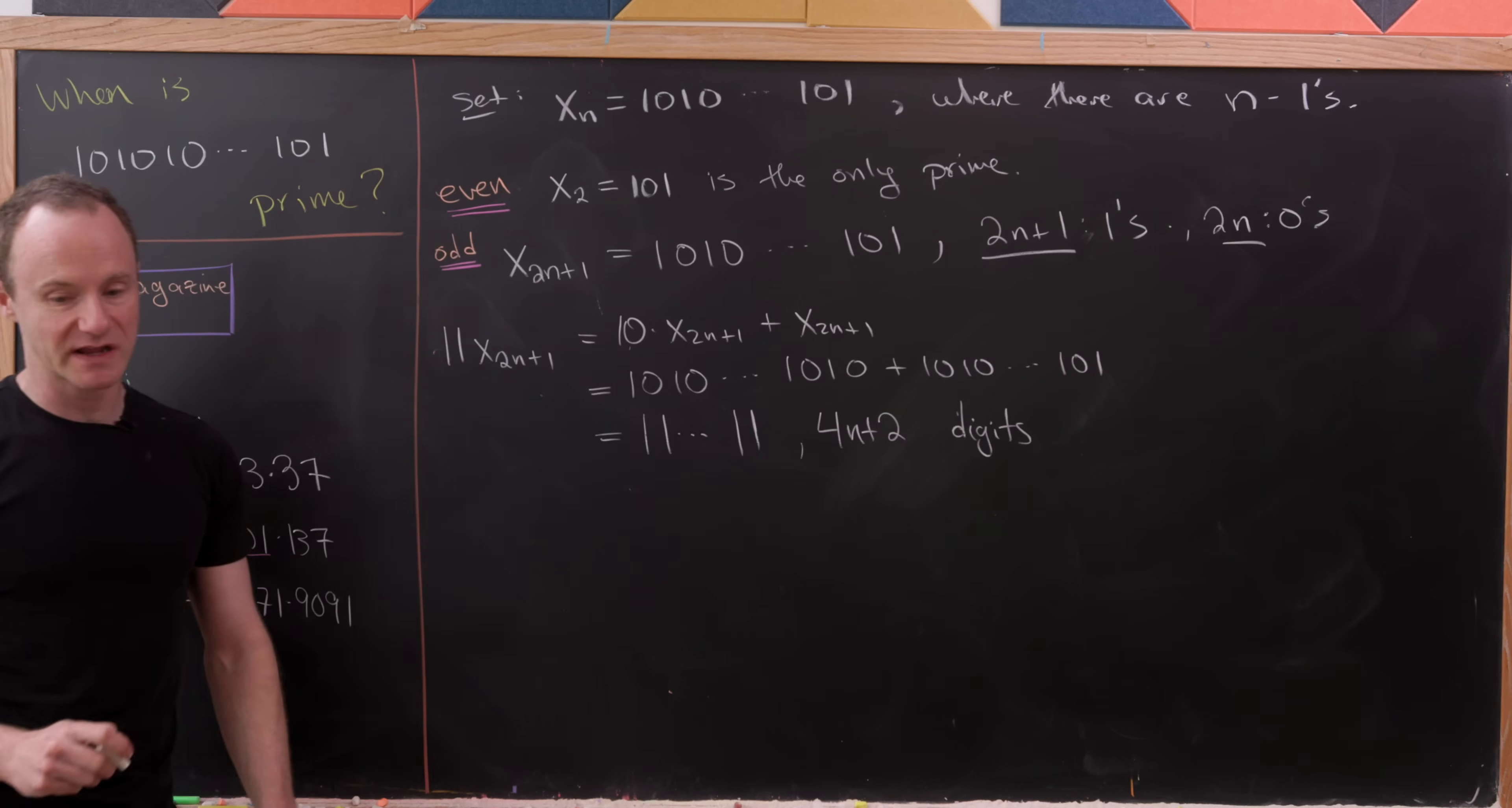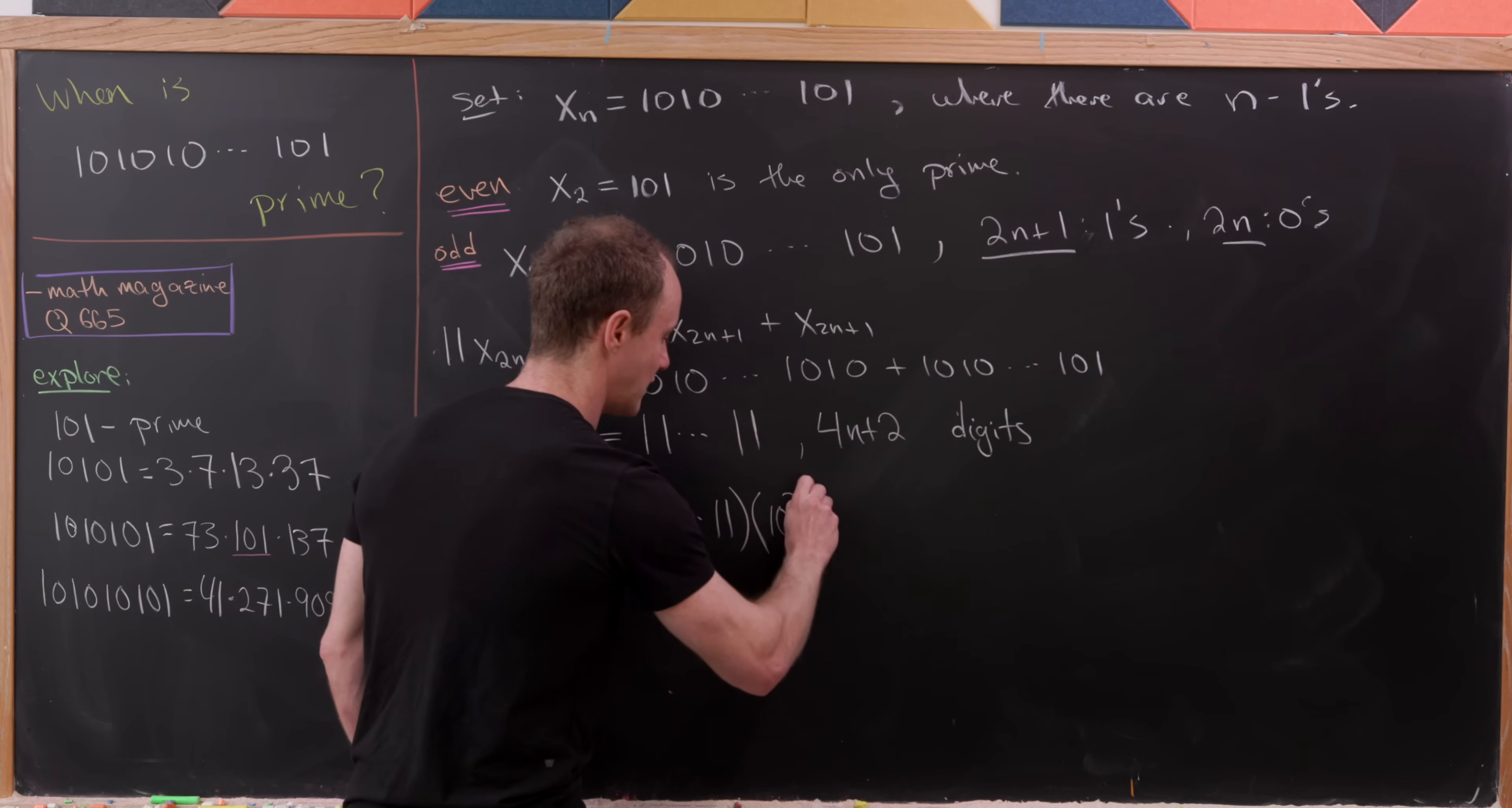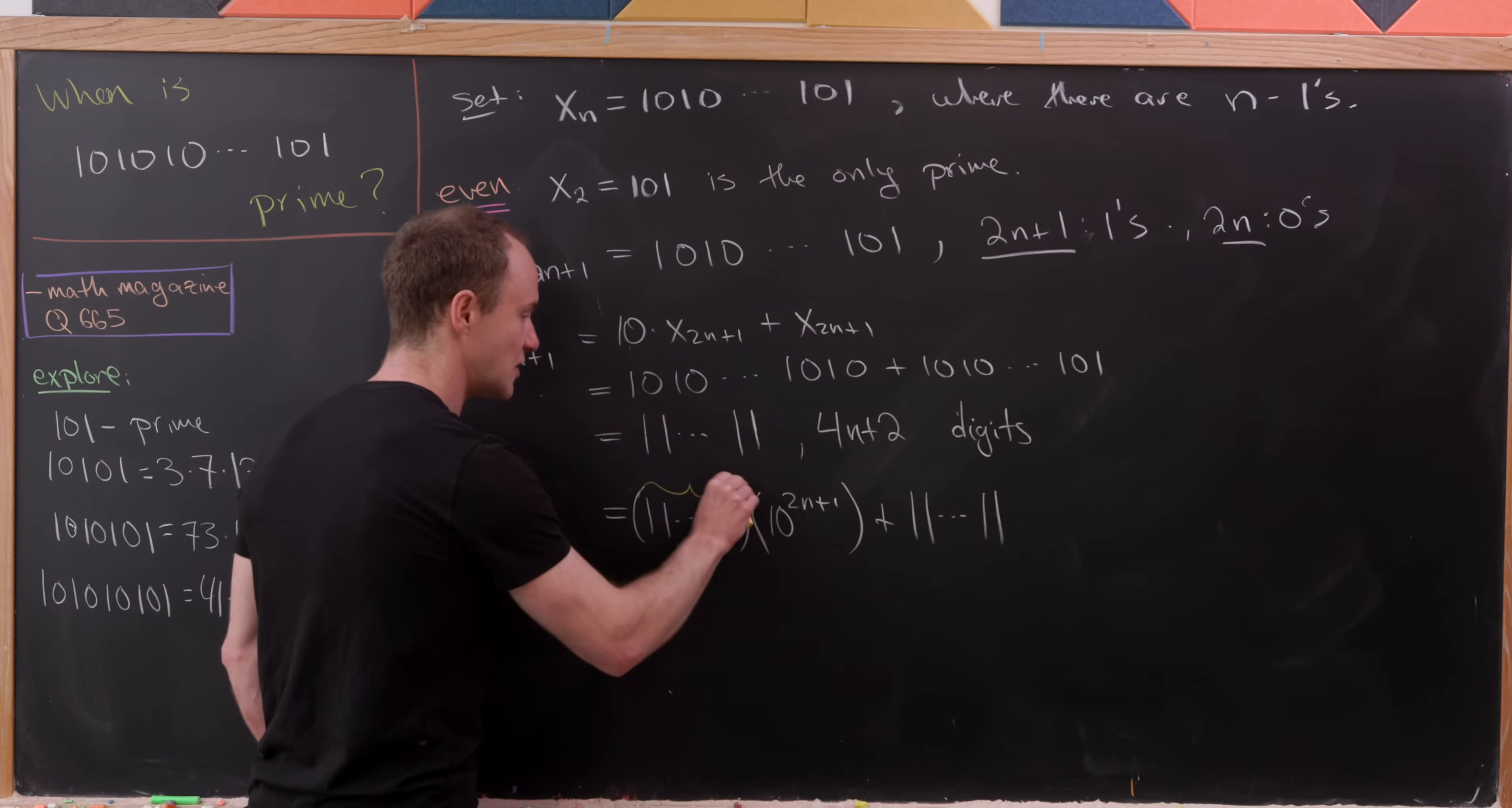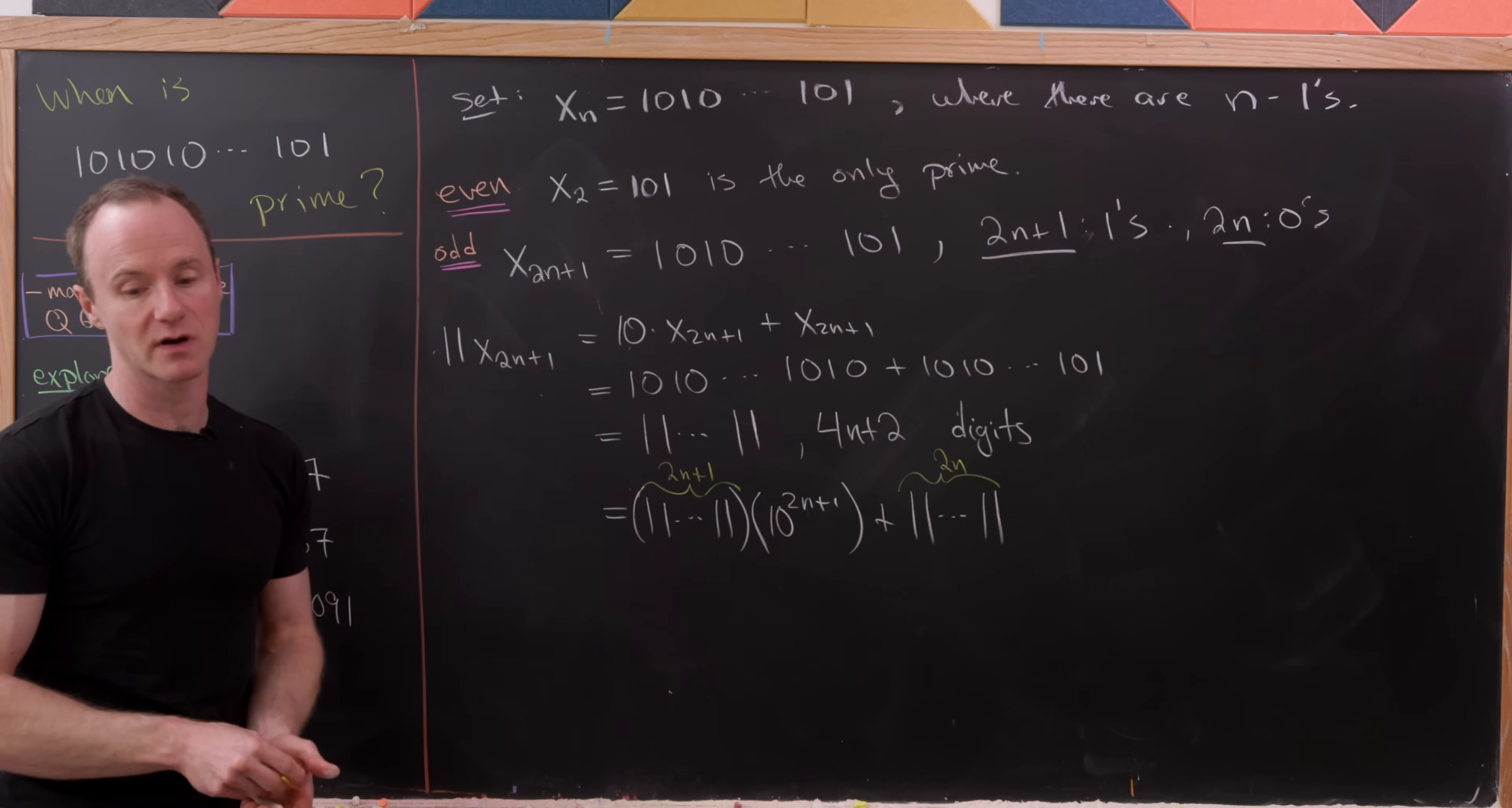But now what can we do with that? Well, now I'm going to take that and write it in the following way. I'm going to write this as 1 repeated a bunch of times, and then times 10 to the 2n plus 1. And then after that, we're going to have plus 1 repeated a bunch of times. Now, how many times are we repeating? Well, in each case, we are repeating 2n plus 1 total times. But notice, essentially what this does is it splits our rep unit of 1 into 2 pieces. And we're able to do that because there are an even number of digits.